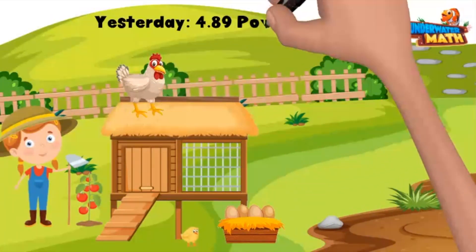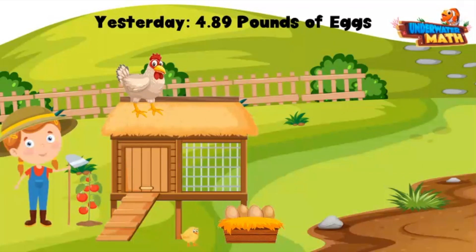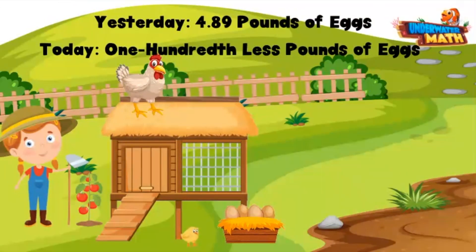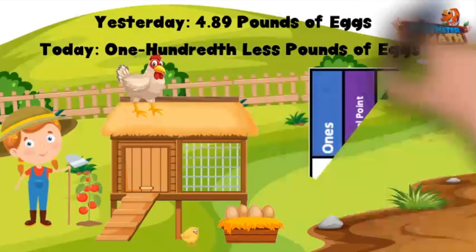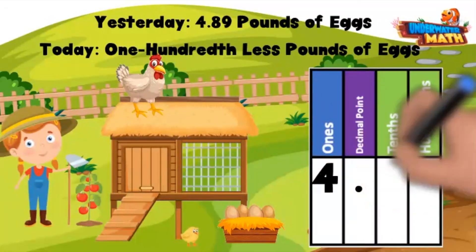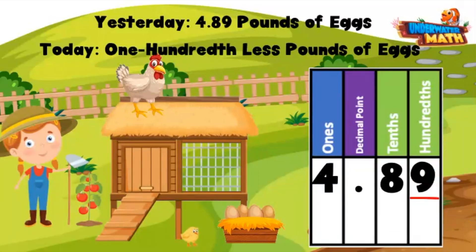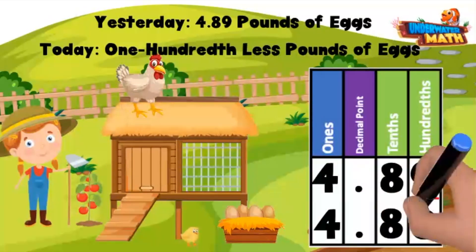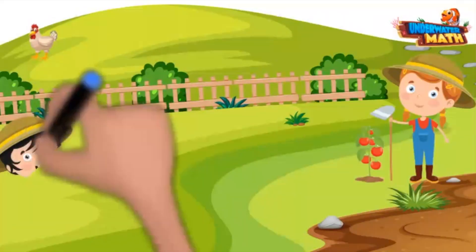Let's walk over to our chicken coop. I collected 4.89 pounds of eggs yesterday. Today I collected one hundredth less pounds of eggs. Remember, when working with hundredths more and hundredths less, we look at the hundredths place. The hundredths place in 4.89 is a nine — since I collected one hundredth less today, that nine is going to come down to an eight. 4.88 is one hundredth less than 4.89.